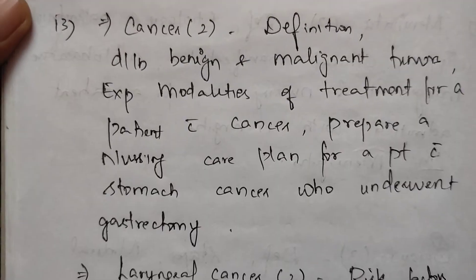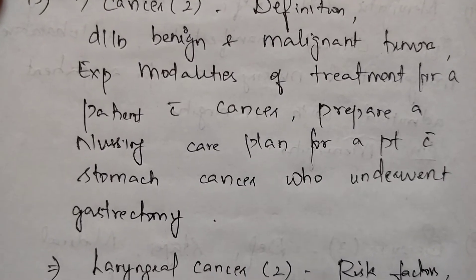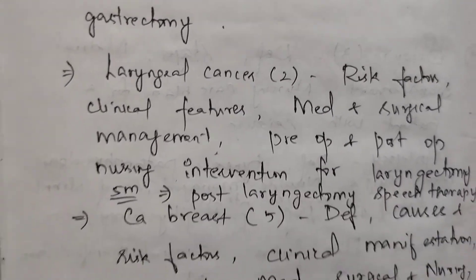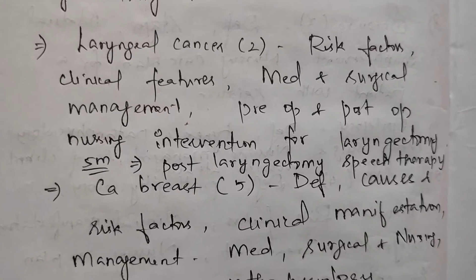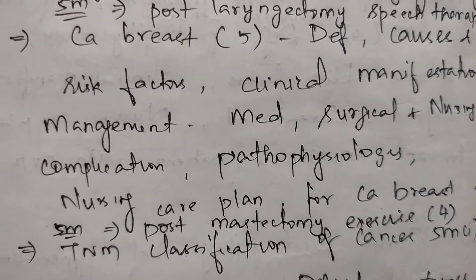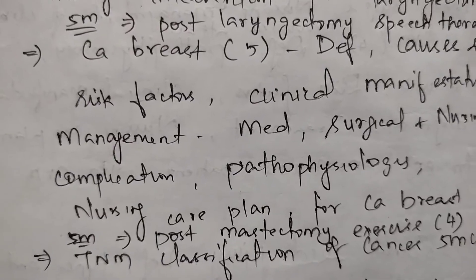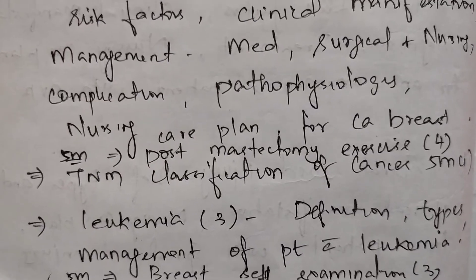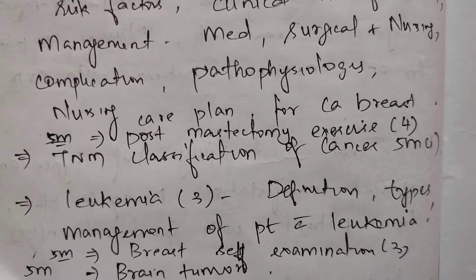Next, cancer — a very important topic. Cancer appears two times: definition, differentiate between benign and malignant tumor, explain modality of treatment for a patient with cancer, and prepare a nursing care plan for a patient with stomach cancer who underwent gastrectomy. Laryngeal cancer two times: definition, risk factors, clinical features, medical and surgical management, pre-op and post-op nursing intervention for laryngectomy; in 5 marks, post-op speech therapy. Breast cancer appears five times overall: definition, causes and risk factors, clinical manifestation, management — medical, surgical and nursing — complication, pathophysiology of breast cancer, and nursing care plan for CA breast. In 5 marks, post-mastectomy exercise four times.